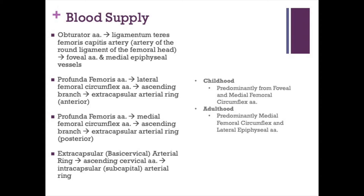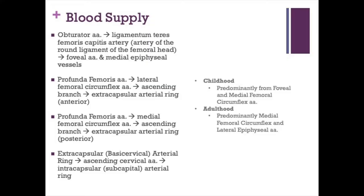Blood supply of the hip really comes down to blood supply of the proximal femur — one of the most important and highly tested topics in all of orthopedics. In childhood it's predominantly from the foveal and medial circumflex artery. In adulthood, the predominant femoral head blood supply is from the medial femoral circumflex artery and the lateral epiphyseal arteries. The obturator artery gives off the artery of the ligamentum teres, which gives off the foveal artery and then the medial epiphyseal vessels.